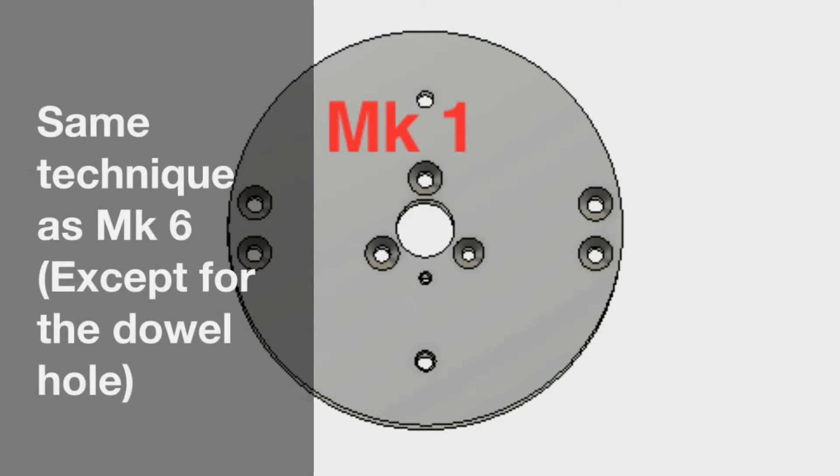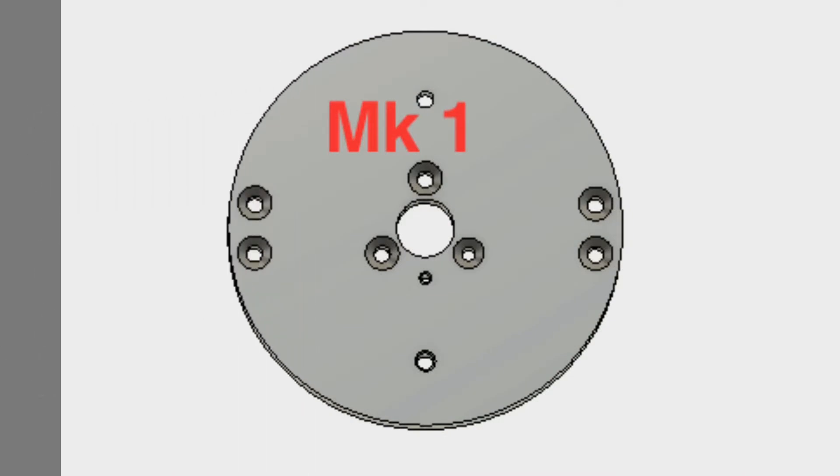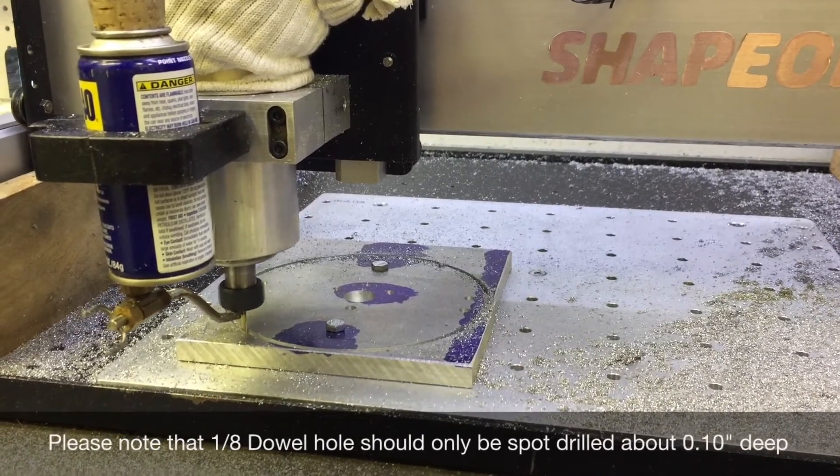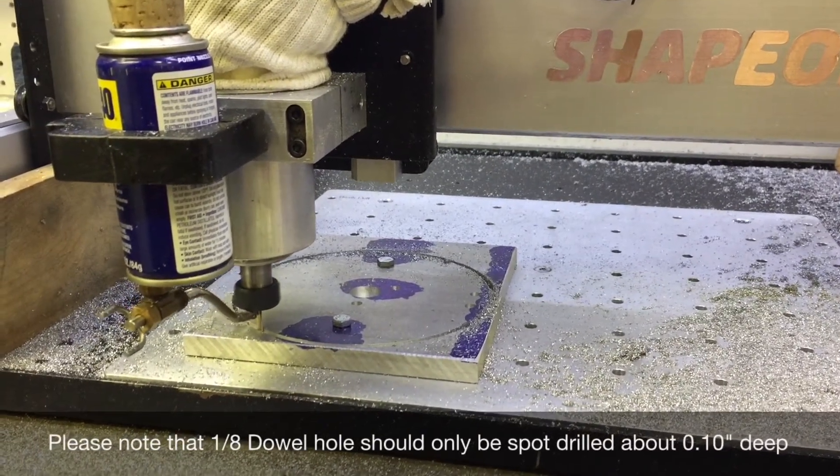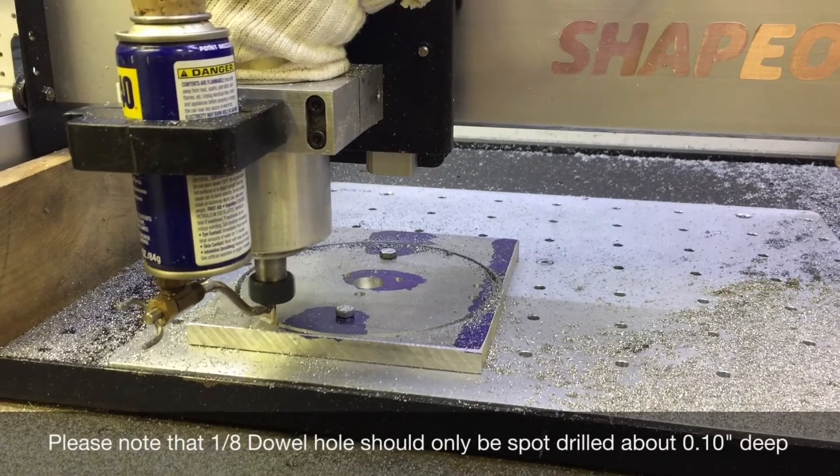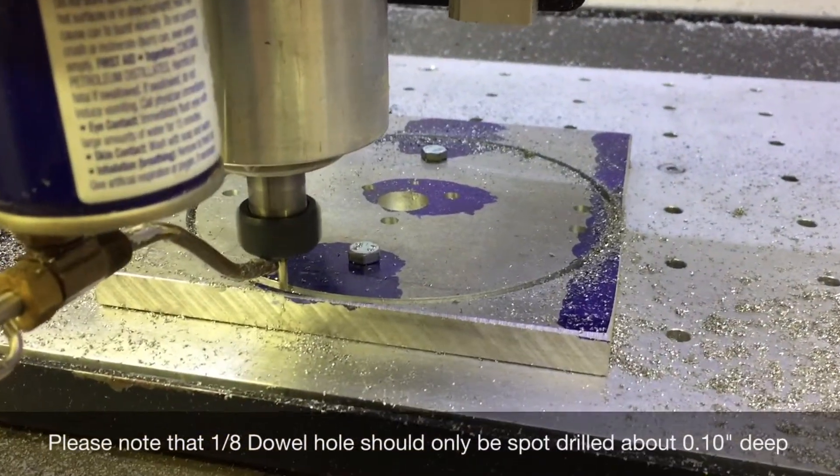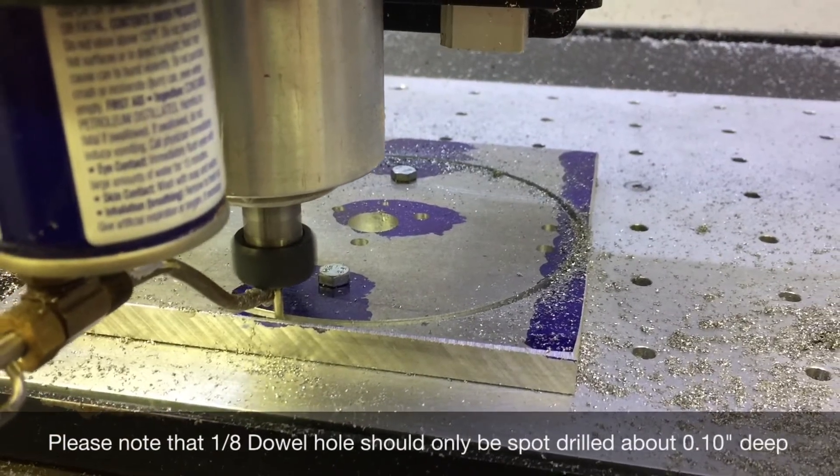Next is piece mark one, very similar. Machine the through holes, machine the through bore to 0.755, spot drill the dowel pin hole about a hundred thousandths deep. We want to leave that hole undersized, which is best done with a 7/64 drill.